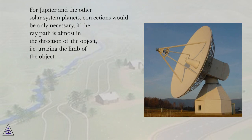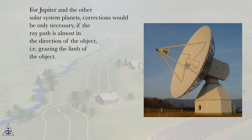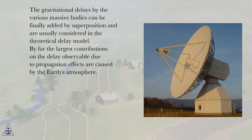For Jupiter and the other solar system planets, corrections would be only necessary if the ray path is almost in the direction of the object, i.e. grazing the limb of the object. The gravitational delays by the various massive bodies can be finally added by superposition and are usually considered in the theoretical delay model.